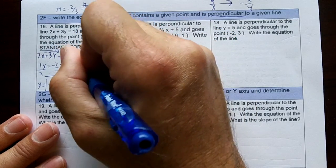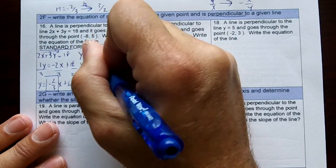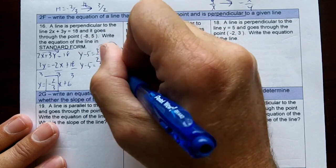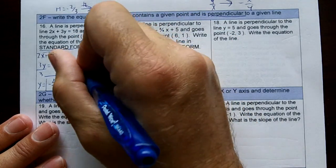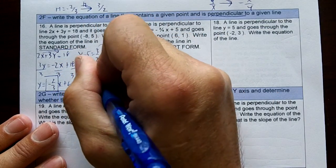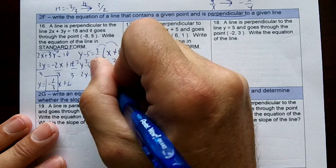Distribute the 3 over 2. y minus 5 equals 3 over 2x plus 3 times 8 is 24, divided by 2 is 12. I've got a fraction. I've got to get rid of it, so I'll multiply everything by 2. 2y minus 10 equals 3x plus 24.